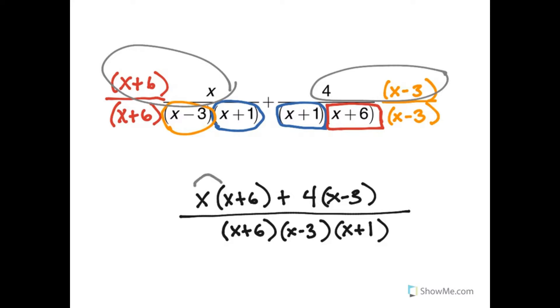x times x plus 6 is going to give me x squared plus 6x. And 4 times x minus 3 gives me 4x minus 12. And those are added together.